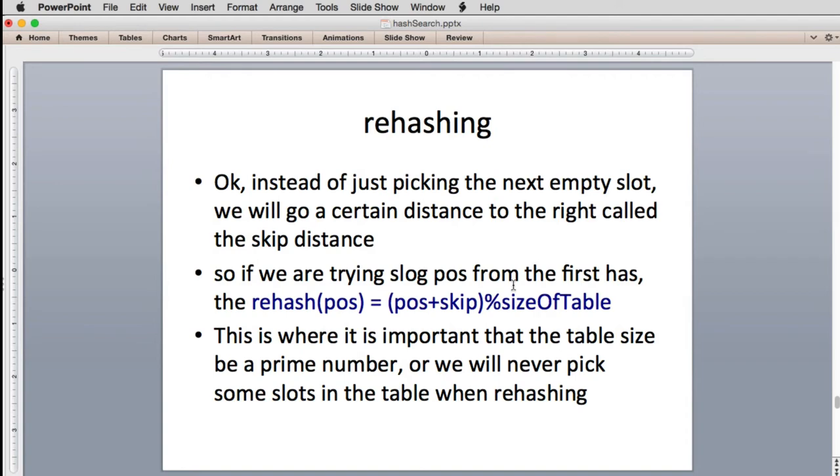So one way to fix this is a technique called rehashing. So instead of using the original slot, you pick another slot. In rehashing, you actually have a new function called the rehash function. You take the position that you last tried, and you have a skip value, it's a constant. And the first one we're going to try is just adding two. So instead of picking the next slot, every time you're going to go two to the right, you're going to skip over one and try the next slot and see if it's empty. And so this will tend to avoid clustering.